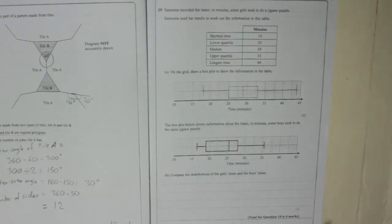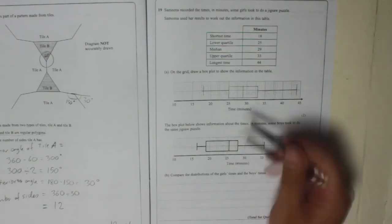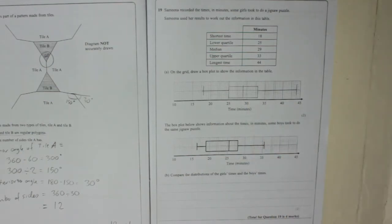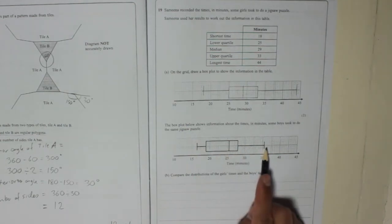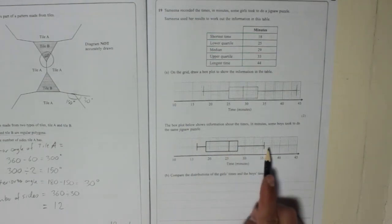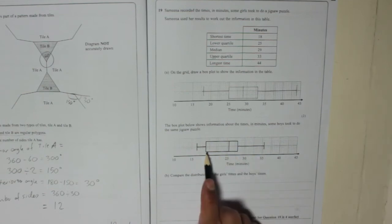What you need to do is compare an average, or compare the medians, and you need to compare a measure of spread, which means either the range, which is the shortest to the longest, or the interquartile range, which is the start of the box to the end of the box. And then you also have to try and relate it to what it might actually mean.